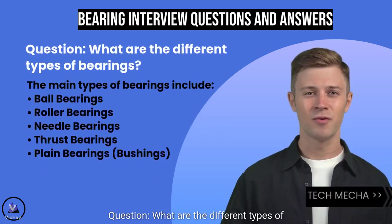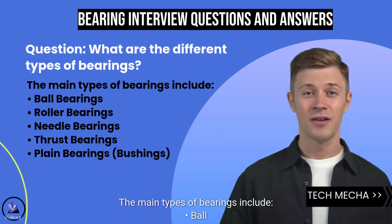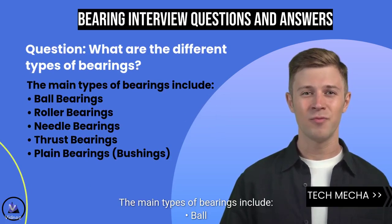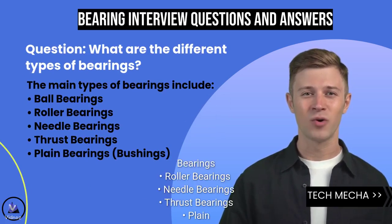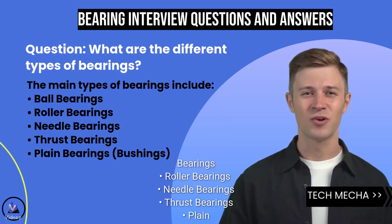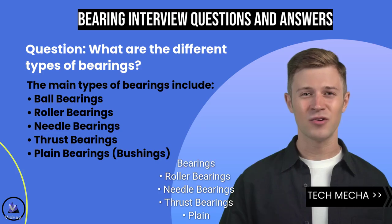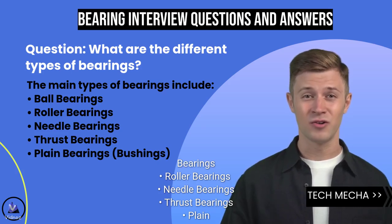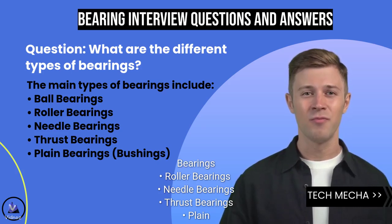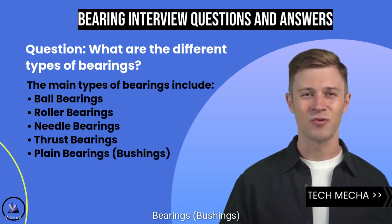What are the different types of bearings? The main types of bearings include: ball bearings, roller bearings, needle bearings, thrust bearings, and plane bearings or bushings.